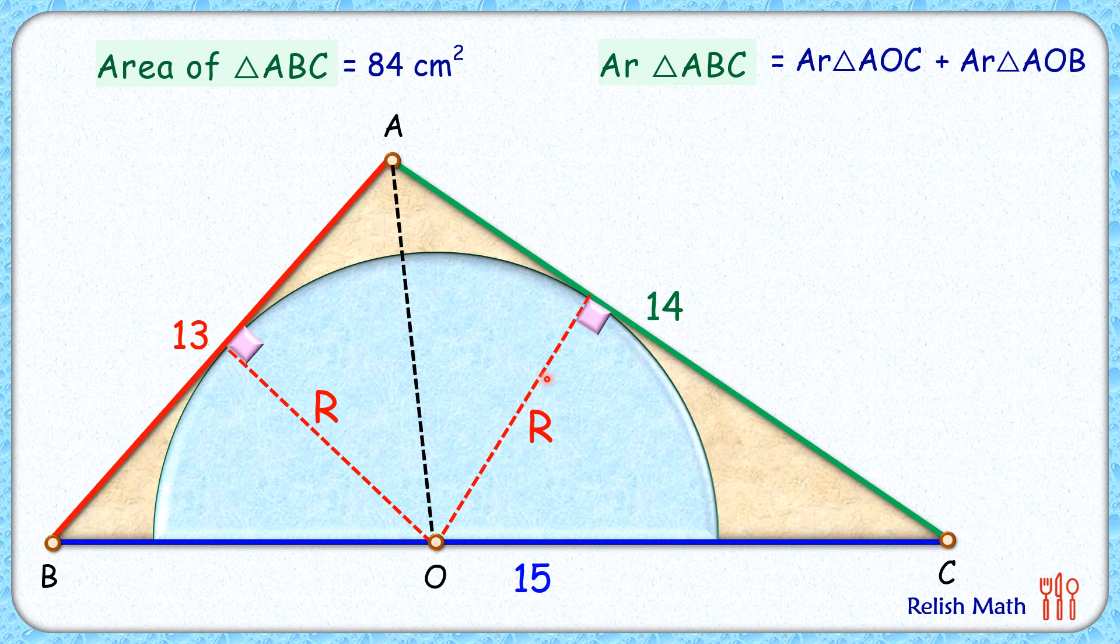Triangle AOC, the area will be half of base which is 14 and height is r, so triangle AOC area is half of 14 times r. Triangle AOB, its area will be half of 13 times r, or in total it is half of 27r.